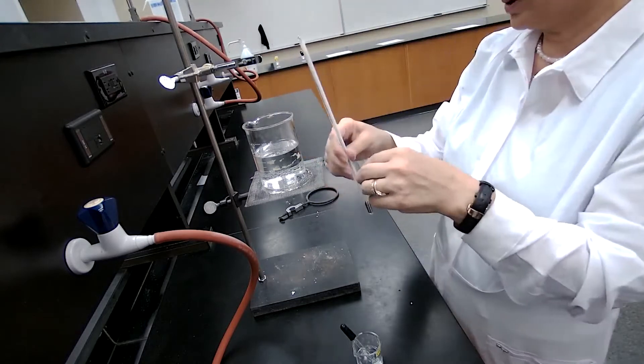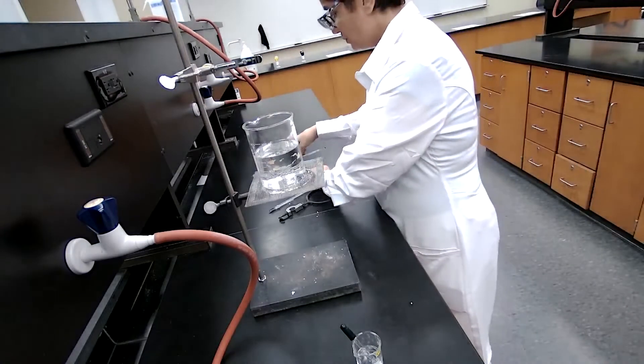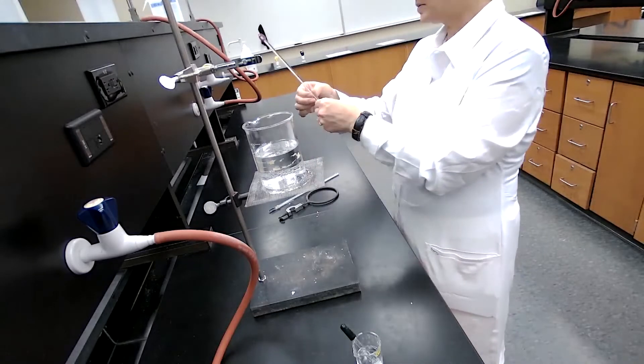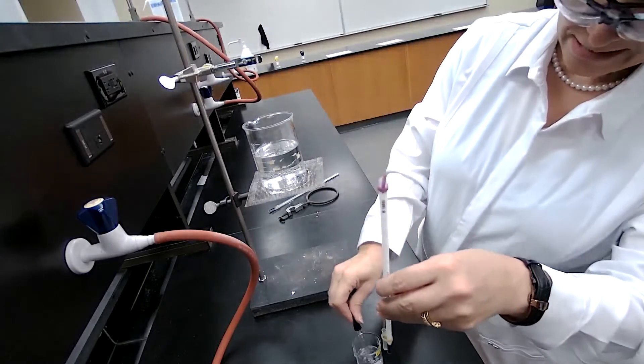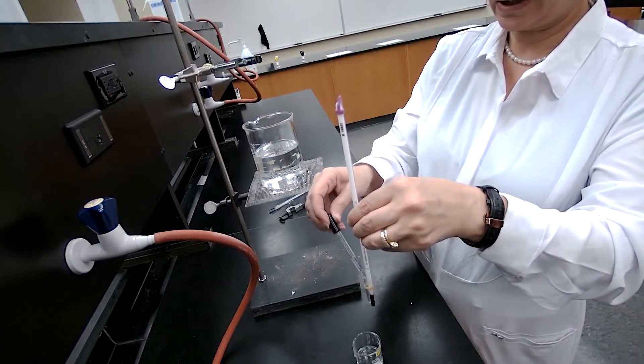And we are going to add our sample into the capillary tube using this one with the ethanol. Just put a few drops of ethanol into the steel tube.